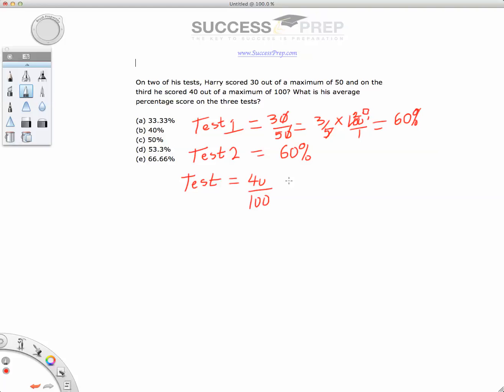Because that is 40 out of 100, we're pretty sure that that is just going to end up being 40%. And the reason that is is because all percentages are written out of 100. So when you're telling us it's 40 out of 100, that's just an automatic 40%. And that is for test three.